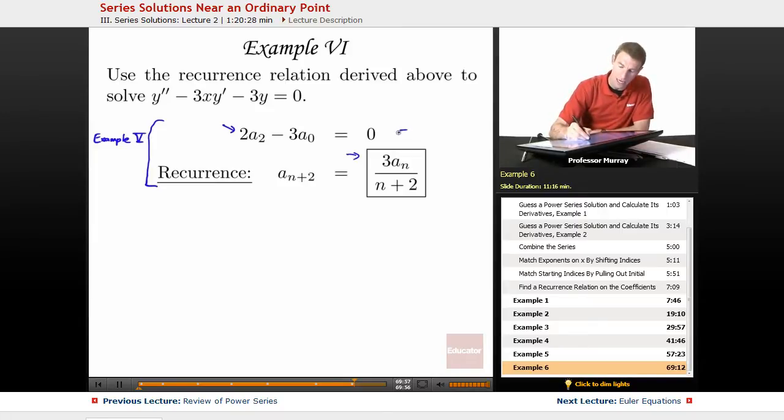What we're going to do with these is go ahead and solve for higher coefficients in terms of lower ones. If we solve for A2, we get A2 is equal to 3A0 over 2.